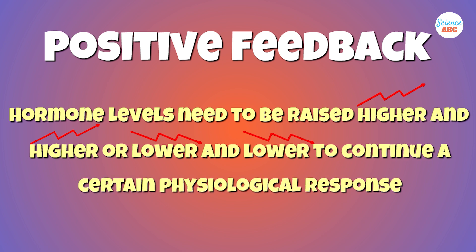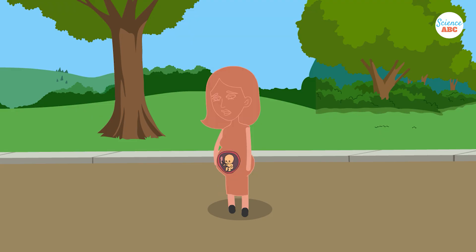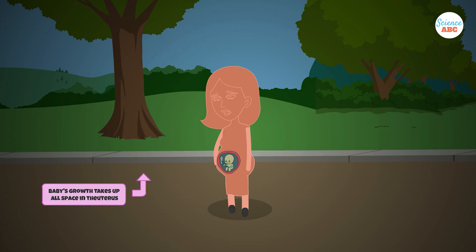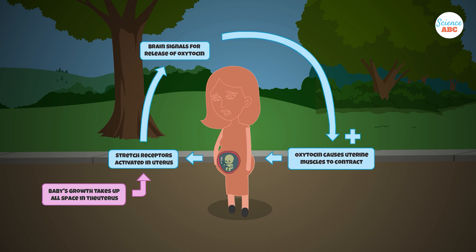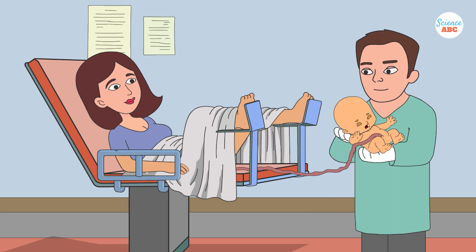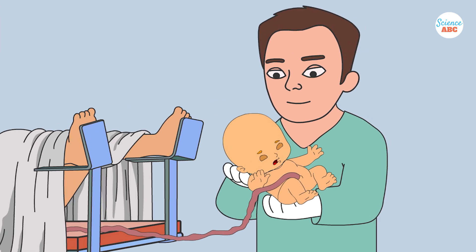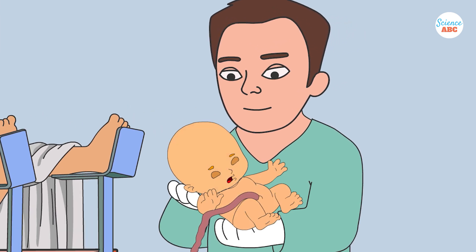Two examples of positive feedback are childbirth and blood clotting. During labor, the posterior pituitary gland in the brain secretes the hormone oxytocin to induce labor pains. Oxytocin levels continue to increase to strengthen the contractions far beyond optimum ranges, and the increasing intensity of the subsequent contractions helps push the baby out of the uterus. Once the birth occurs, the levels of oxytocin decrease. If this were a negative feedback loop, oxytocin secretions would cease when the muscle contractions reached an optimal range.